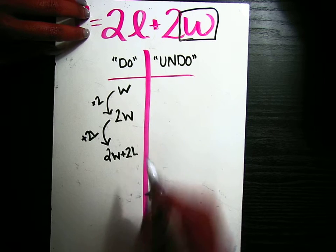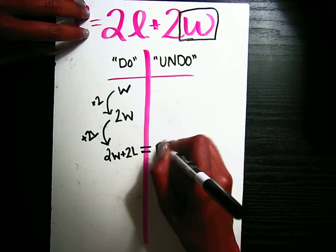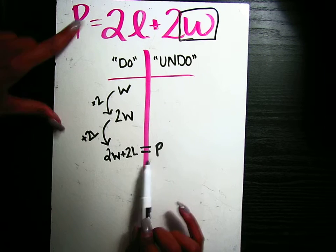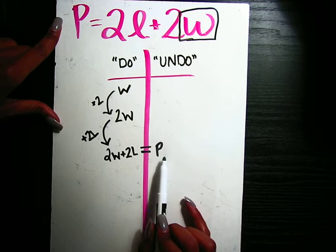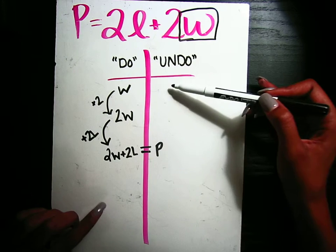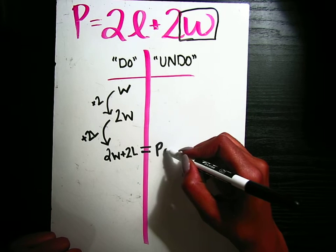Now we get to the equal sign. This is where we're going to switch sides and we're going to start to undo. So I know that 2L plus 2W is equal to P. That's the equation they gave me. So now that I've built the equation, I know how I can work backwards to solve for that W. So here we have P.